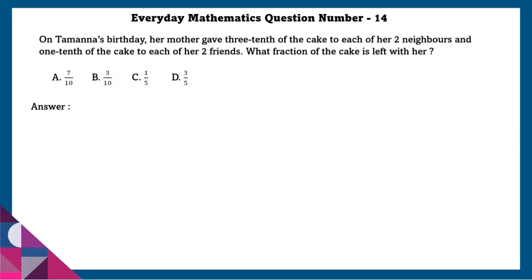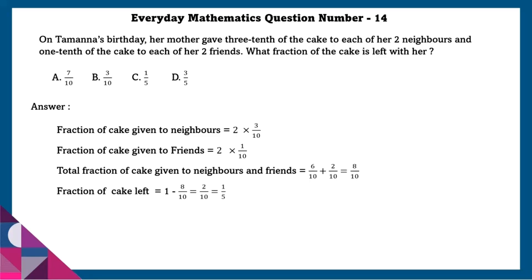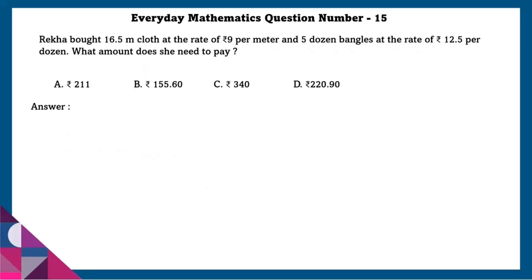Question 14: On Tamana's birthday, her mother gave three-tenths of the cake to each of her two neighbors and one-tenth of the cake to each of her two friends. What fraction of the cake is left? Fraction given to neighbors is 2 × 3/10. Fraction given to friends is 2 × 1/10. Total fraction given away is 8/10. Fraction of cake left is 1 minus 8/10, that is 2/10, reduced to 1/5.